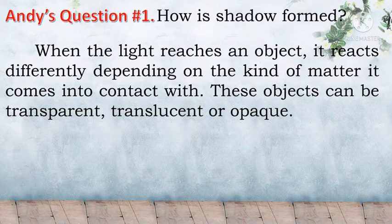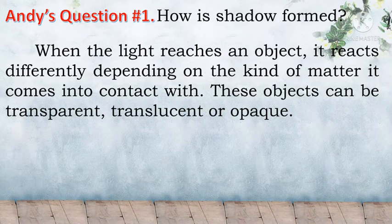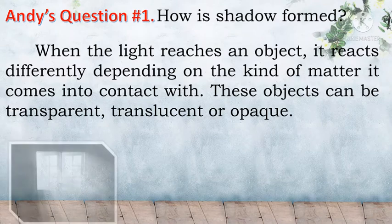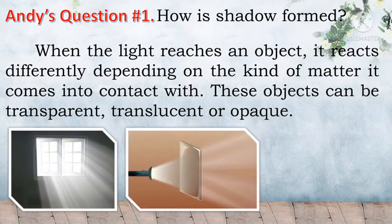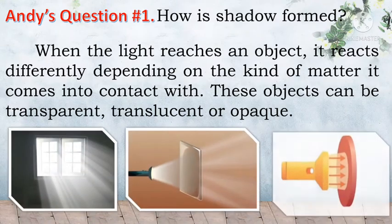When light reaches an object, it reacts differently depending on the kind of matter it comes into contact with. These objects can be transparent, translucent, or opaque.